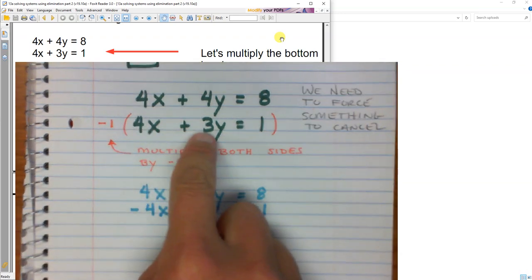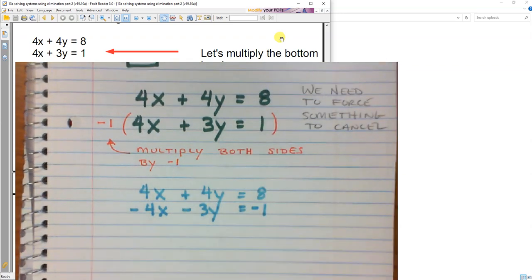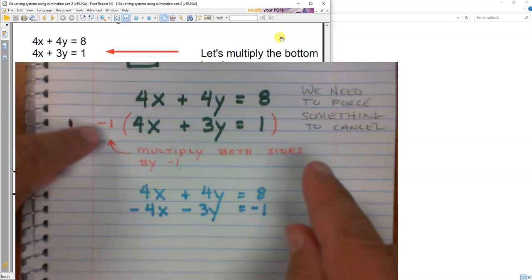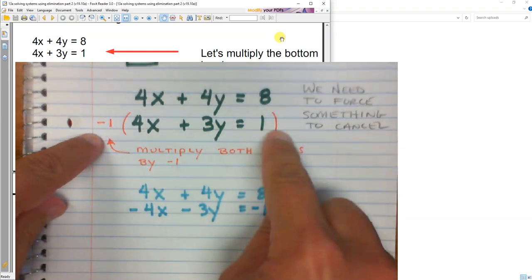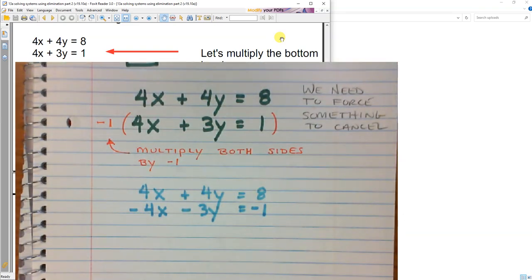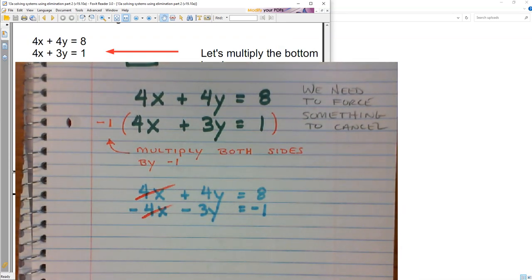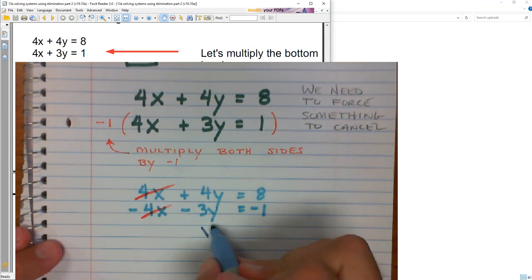It was a big distribution that I just did. Negative 4x, negative 3y, negative 1. And now something will cancel out. You just saw today's lesson. Everything else is old material. Let's solve it. Red marker of death and destruction. These guys will cancel. I'm left with y equals 7.